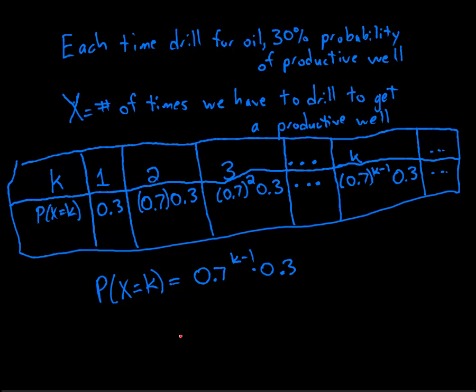Now if that's truly a probability distribution, then it should be that the sum from k equals 1 to infinity of 0.7 to the k minus 1 times 0.3 is 1. Well, let's see if that's the case. So I'm going to pull up Wolfram Alpha here.